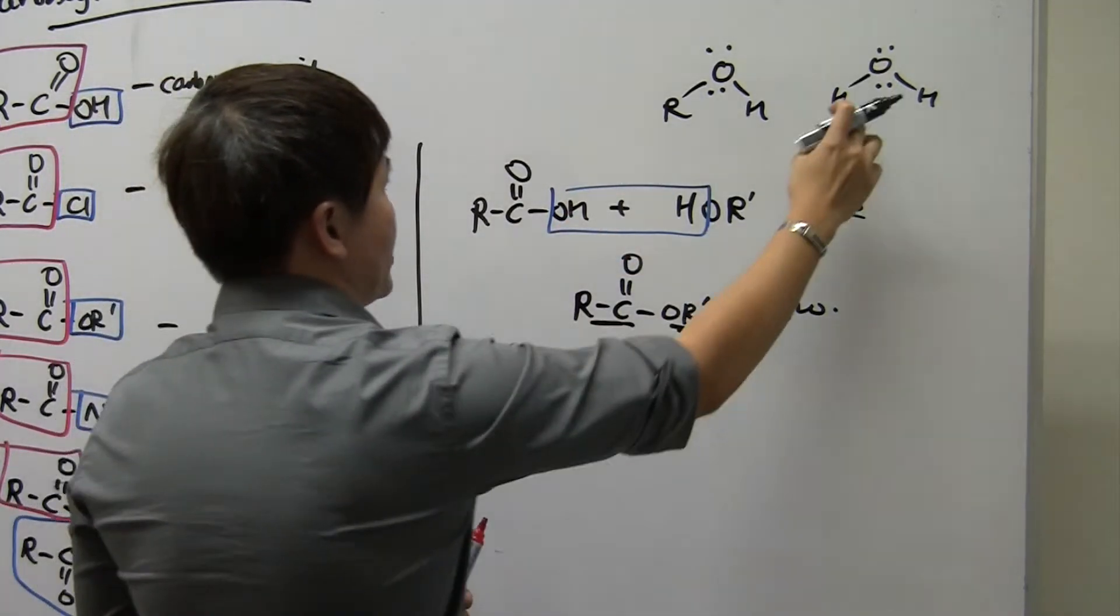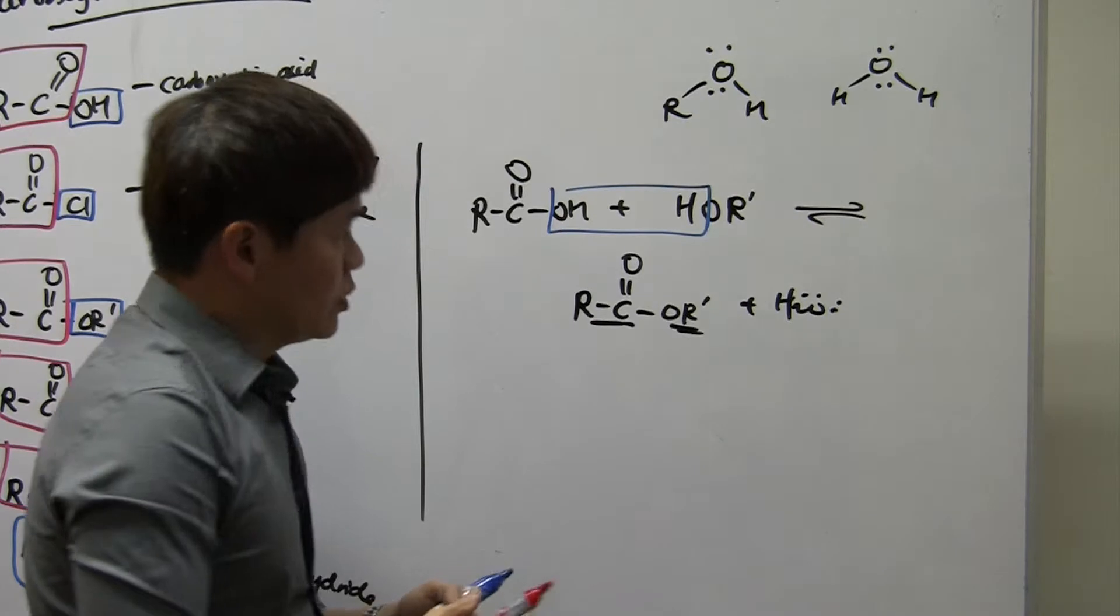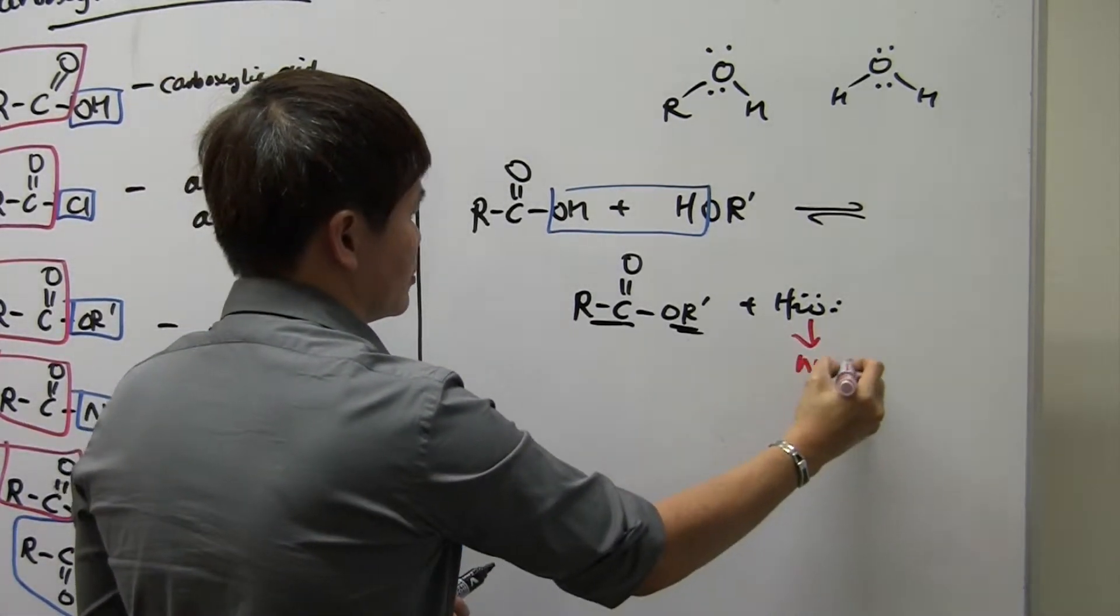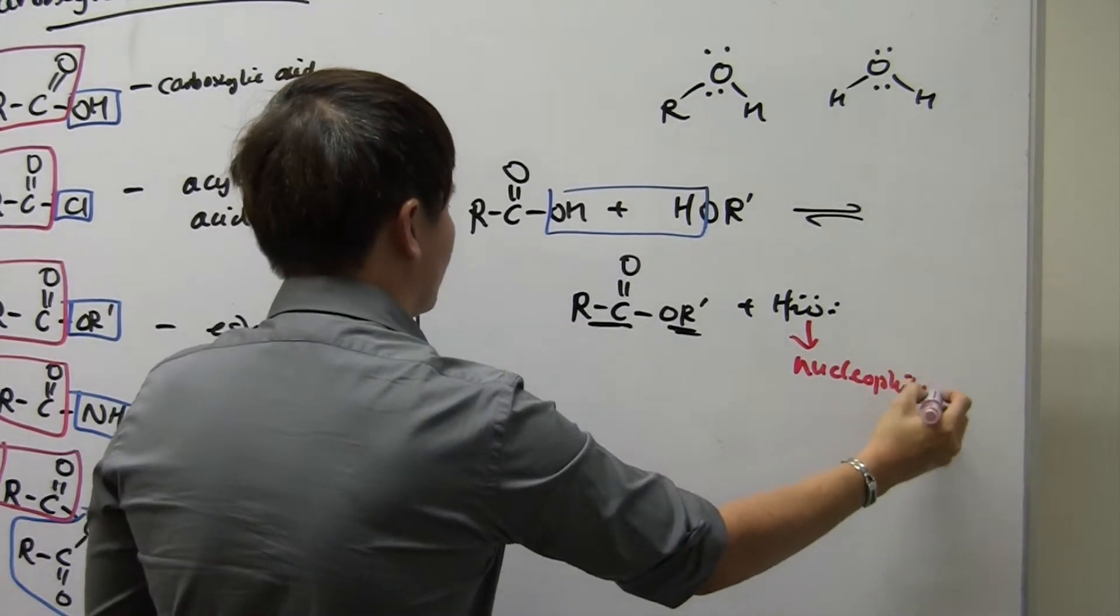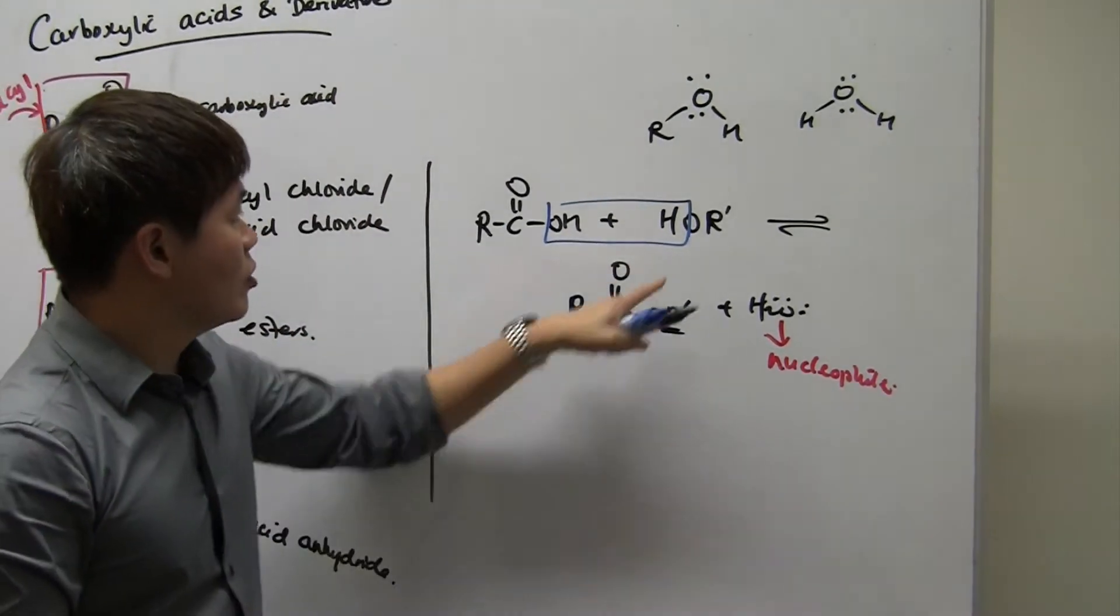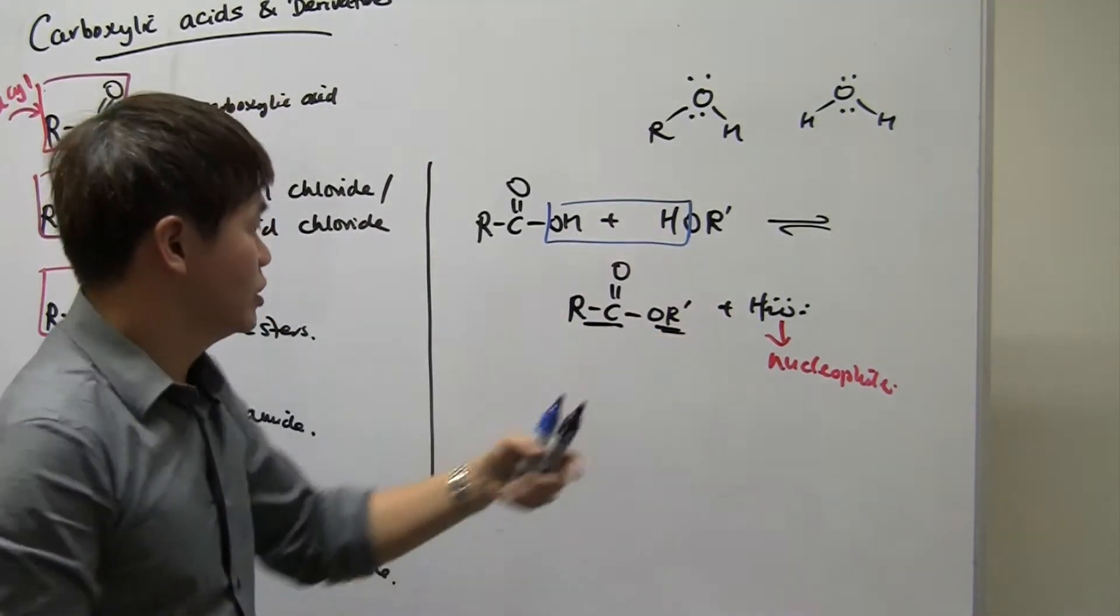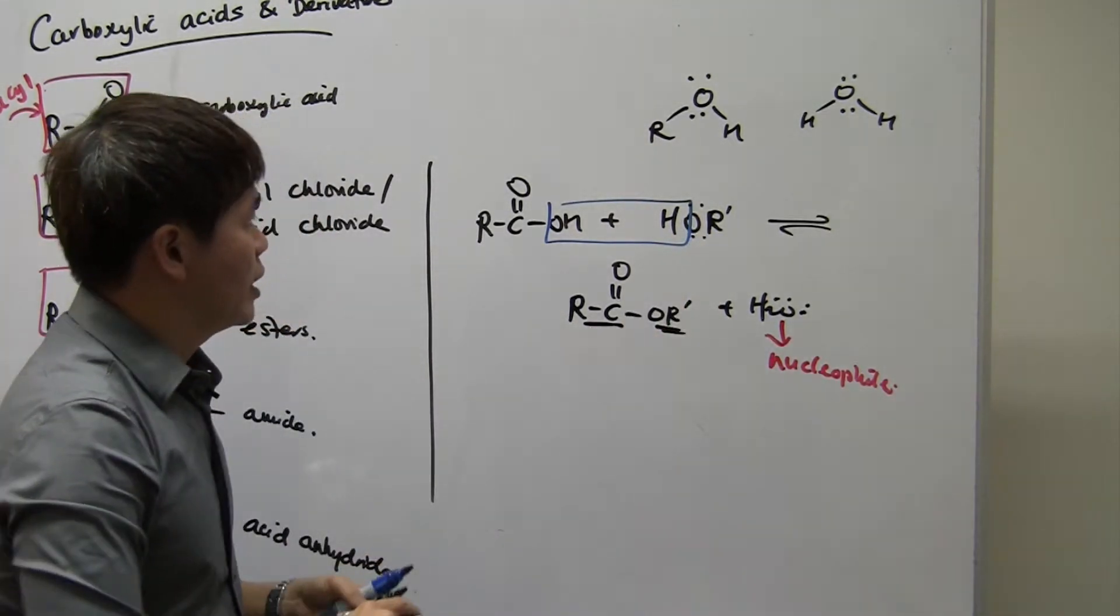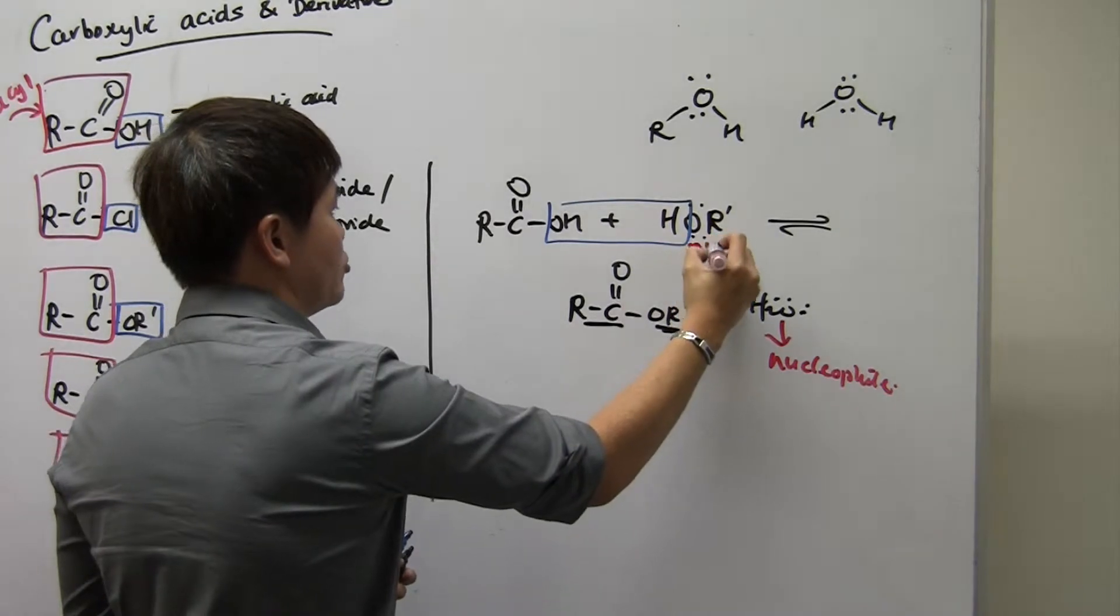So water basically has got lone pairs and we know that species with a lot of high electron density basically are called nucleophiles. So water can serve as a nucleophile in reactions and if alcohols are the same as water in terms of structure, alcohols should also have two lone pairs and therefore alcohols should be a nucleophile as well.